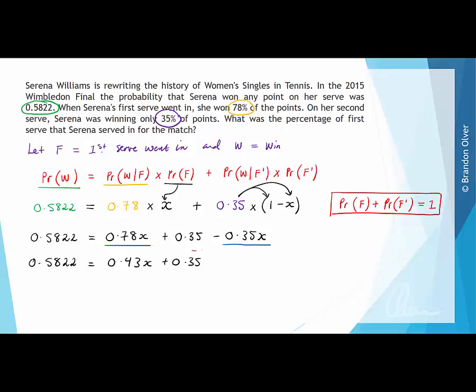Then we can subtract 0.35 from both sides of the equation, and that becomes 0.2322 is equal to 0.43X. Then to get X by itself, we divide by the 0.43, divide by the 0.43, which gives X is equal to, and if you put in a calculator that comes out to be 0.54, which means the percentage of first serves that Serena served in is 54% over the entire match.